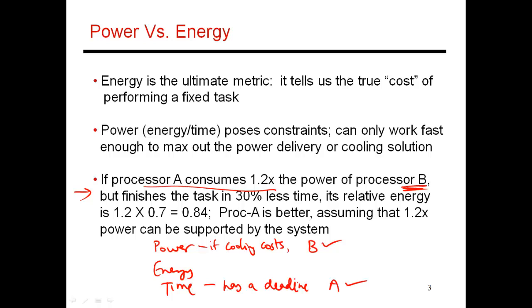If both processors meet the time and power constraints, I should look at energy, because the energy metric tells me the true cost of finishing a given amount of work — ultimately I'm billed by the power company for energy consumed. If processor B consumes P power and takes T time, processor A would use 1.2P power and 0.7T time, giving a total energy of 0.84PT, versus PT for B. So A consumes less energy for the given task, and that is what I should go with.